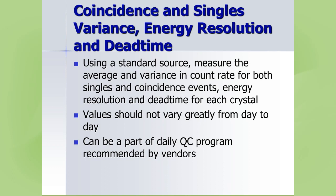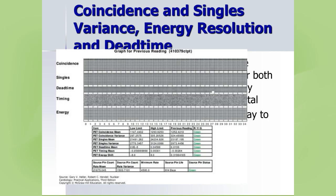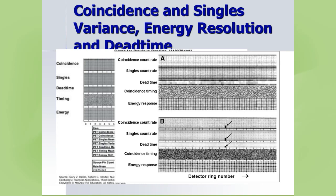The daily QC also acquires coincidence and singles variation, energy resolution, and dead time using the standard source to check all detector block responses. For example, on a GE scanner the display shows individual detector block results and numeric pass/fail indicators in green. If detector blocks fail — shown as black blocks — this indicates a service call is needed before injecting patients. The fourth ring of that PET scanner in this example would need service to return to full calibration.